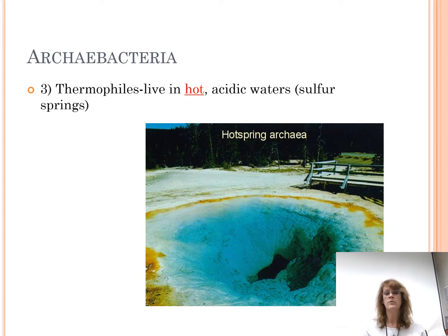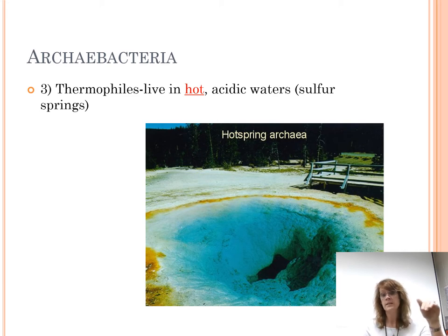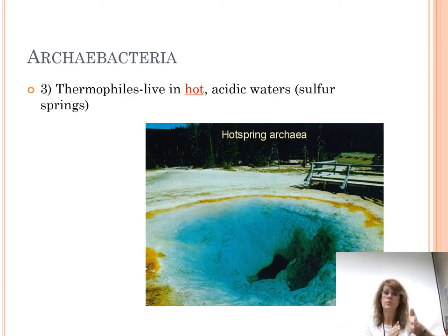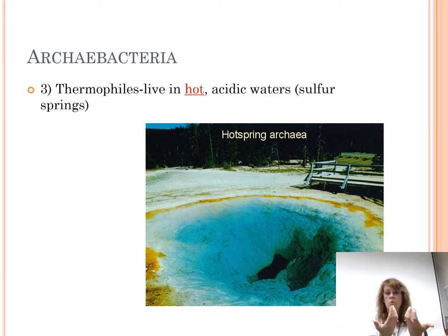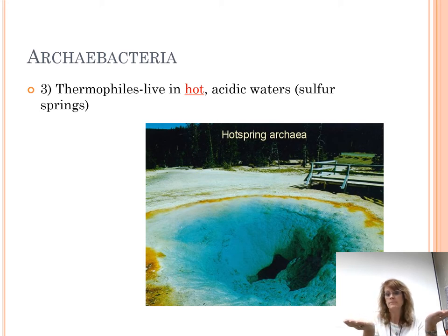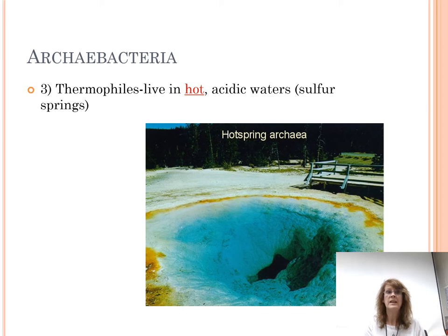We also find thermophiles deep in the ocean along what we call the rifts. The Atlantic Ocean is getting bigger — it has the Great Atlantic Rift running up the middle. Hot magma comes to the surface, hits cold seawater, hardens, and forms crust. So our Atlantic Ocean is spreading, creating areas of very hot water, and these types of bacteria are found there.